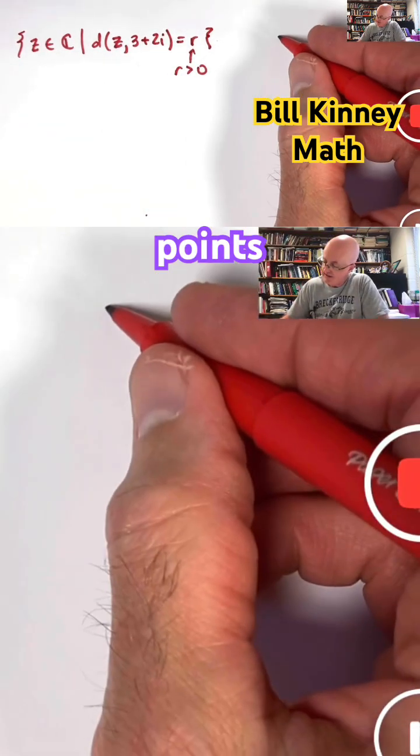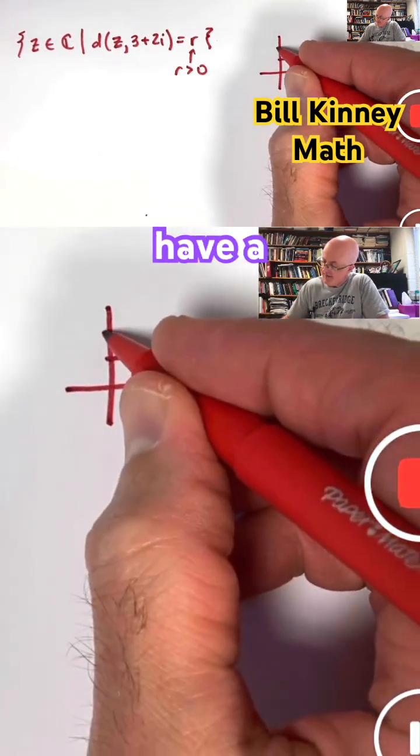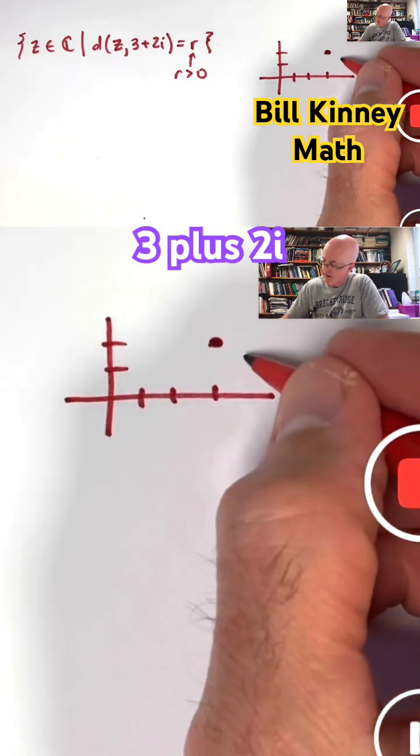We're talking about all points in the complex plane that have a constant distance of R to 3 plus 2i.